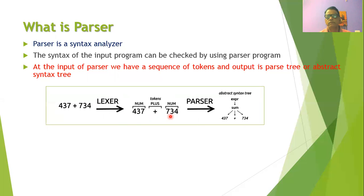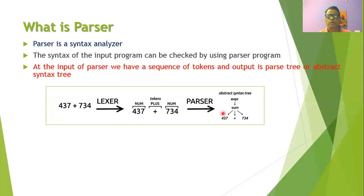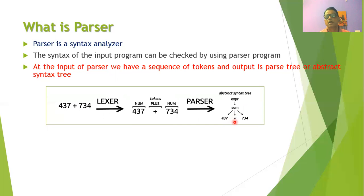When this sequence of tokens is connected to the parser, at the output we will generate an abstract syntax tree — a tree representing an expression with one argument being 437, another being operator plus, and the third being the number 734.